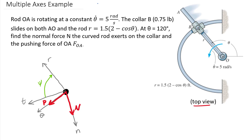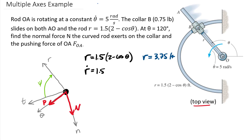We know r equals 1.5 times (2 minus cosine of theta). Plugging in 120 degrees, r equals 3.75 feet — the instantaneous value of r. Taking the time derivative gives r-dot. The 1.5 carries along; the derivative of the constant 2 goes to zero; the derivative of cosine is negative sine of theta. Then via implicit differentiation, we multiply by theta-dot — the time rate of change of theta — giving r-dot equals 1.5 times (sine of theta) times theta-dot.